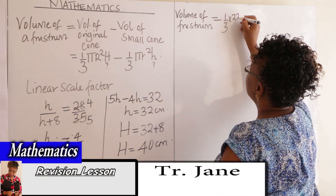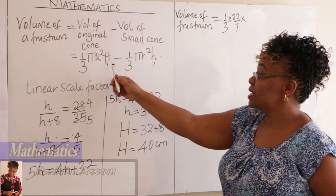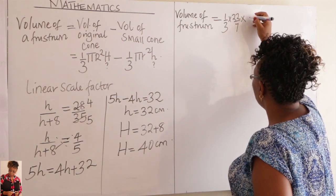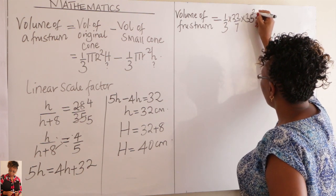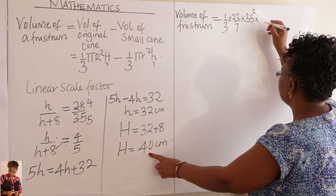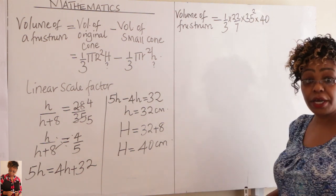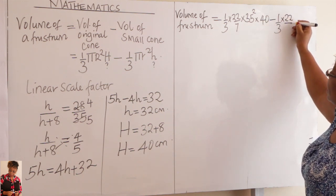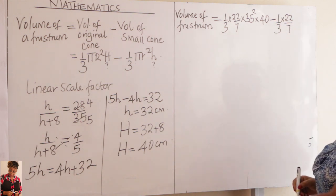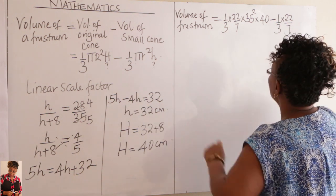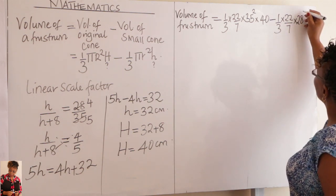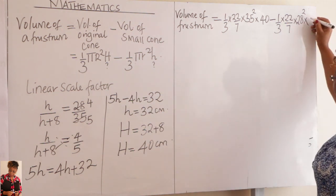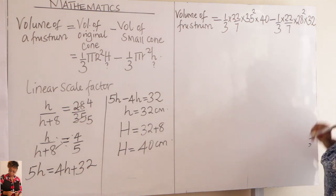You come to your formula. One-third times 22 over 7 times our radius, capital radius. Our capital radius is 35, the radius of the big cone. So 35 squared times our height. Capital height is 40. Okay? Then you minus the volume of the smaller cone. The radius of the smaller cone is 28. So 28 squared times the height, small height. We've got it as 32.